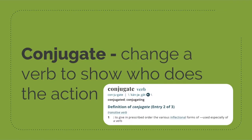One thing that we need to talk about is the definition of conjugate. We actually don't use this word a lot in English because generally we already know how to conjugate verbs. It's usually a term that's used when learning a second language or a foreign language. But the actual meaning of the word is that you change a verb to show who does the action.